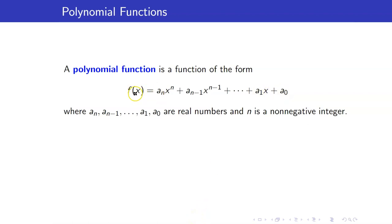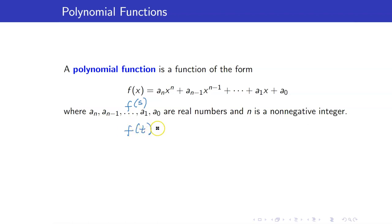Take note that the variable here can be any variable. It can be x, it can be s. So you can have something like f of s or f of t. This means that all the variables appearing in f of t will just be t, and all the variables in f of s will be s.